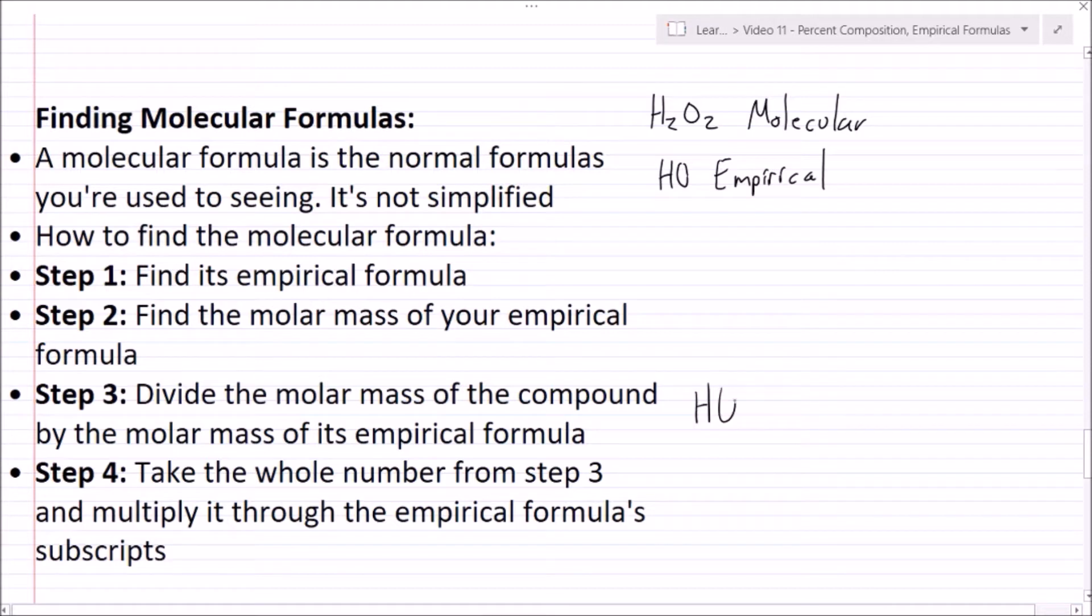So let's say that I found my empirical compound was HO. In step 3, I got the number 5. For step 4, I would just do H5O5.